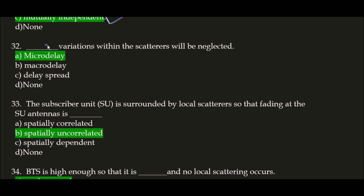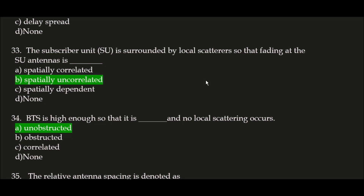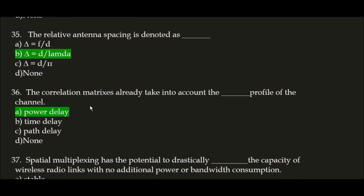Next question: blank space variations within the scatterers will be neglected. The correct answer is option A, microdelay. Microdelay variations within the scatterers will be neglected. Next question: the subscriber unit (SU) is surrounded by local scatterers so that fading at the subscriber unit antennas is spatially uncorrelated; the correct answer is option B, spatially uncorrelated. Next question: BTS is high enough so that it is unobstructed and no local scattering occurs — option A is correct. The relative antenna spacing is denoted as delta equals D divided by lambda; the correct answer is option B.